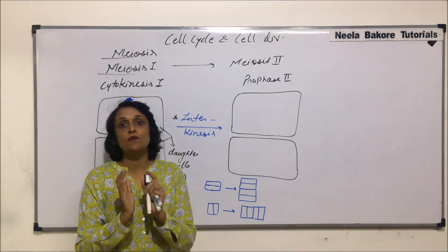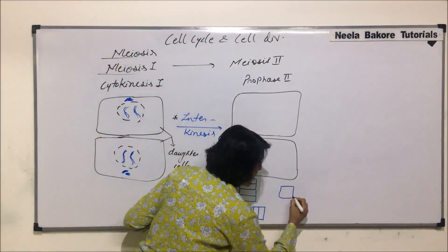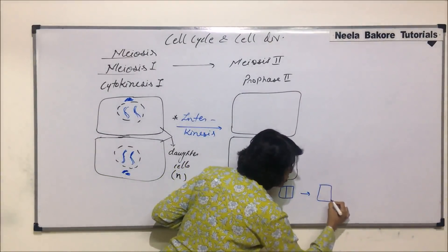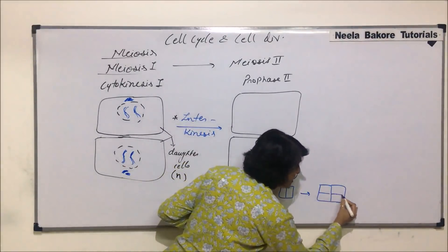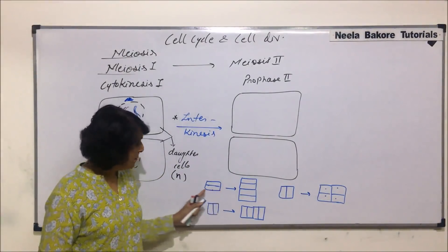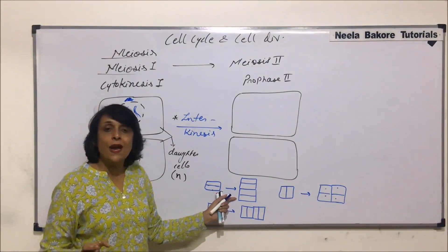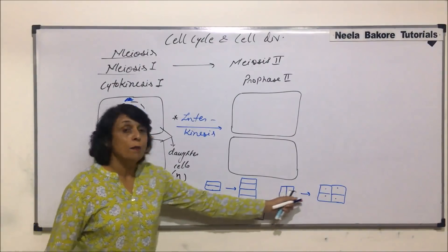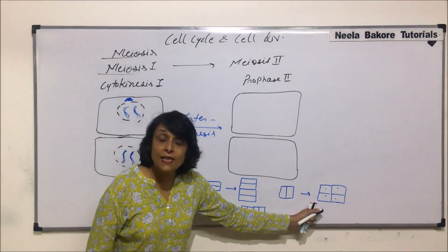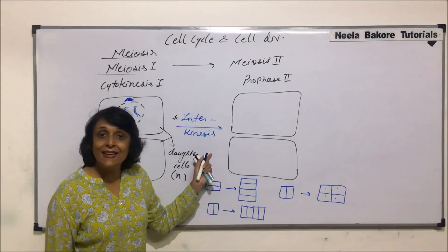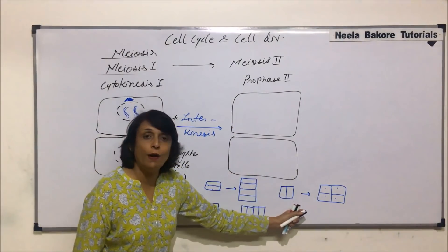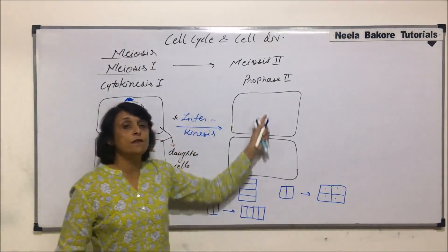If we want a mass of cells to be formed, the planes must change. For example, if the first division is vertical and the next is horizontal, we get a mass of cells. So if the plane keeps alternating — vertical, then horizontal, then vertical, then horizontal — we get a mass of cells. Taking a common example: if the first division was horizontal, the next division is going to be vertical.